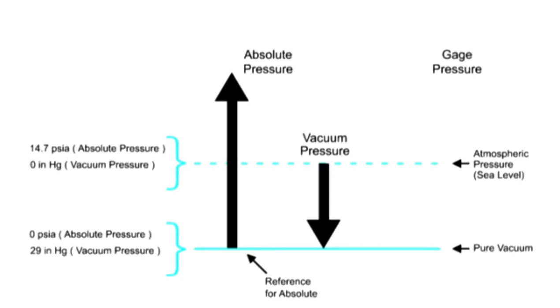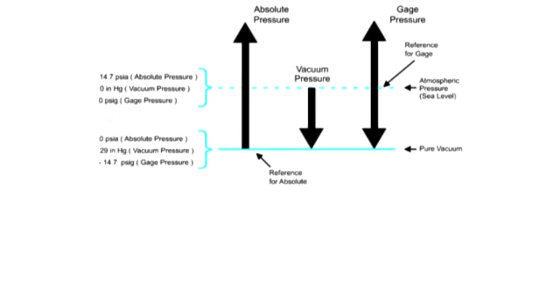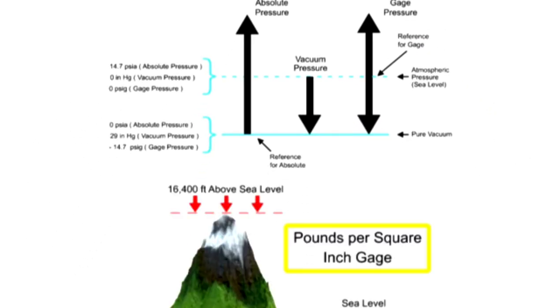Gauge pressure scale uses atmospheric pressure as the reference. The unit of measurement for gauge pressure is pounds per square inch gauge, abbreviated as PSIG.